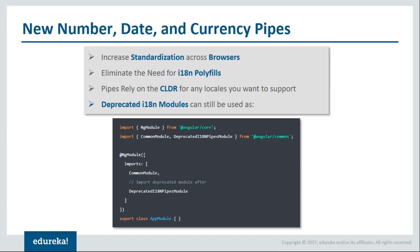The Angular team has introduced new number, date, and currency pipes that increase standardization across browsers. Previously, one had to rely on the browser to provide number, date, and currency formatting using i18n polyfills or i18n APIs, which led to inconsistencies between browsers and different bugs. All of this has been fixed in Angular 5 with new pipes that do not rely on i18n polyfills. When you upgrade to Angular 5 you'll use the new pipes by default, but you can opt into the previous implementation by importing the deprecated i18n pipes module from @angular/common.